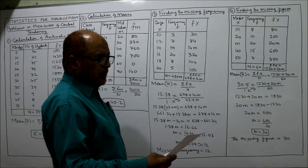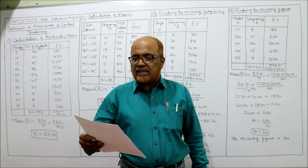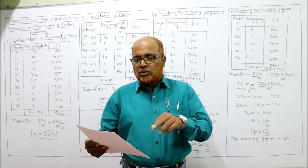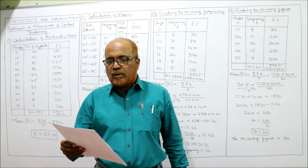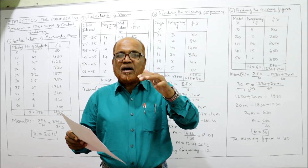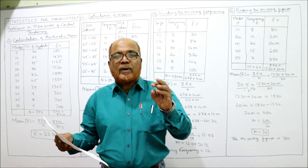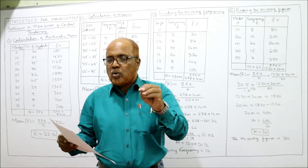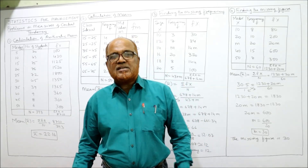Let's look at the first problem: 'Calculate the arithmetic mean from the following frequency distribution of marks at a test in statistics.' We are required to calculate the arithmetic mean of the marks. Marks given are 5, 10, 15, 20, 25, 30, 35, 40, 45, 50, and the number of students (frequencies) are given. For example, 20 students scored 5 marks, and 43 students scored 10 marks. This is called a discrete frequency distribution.